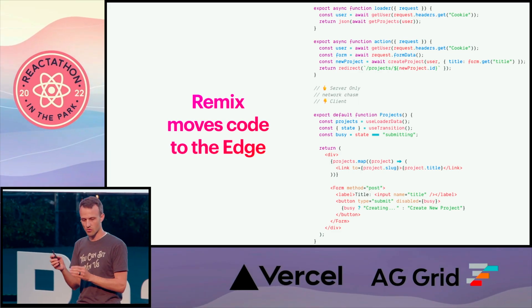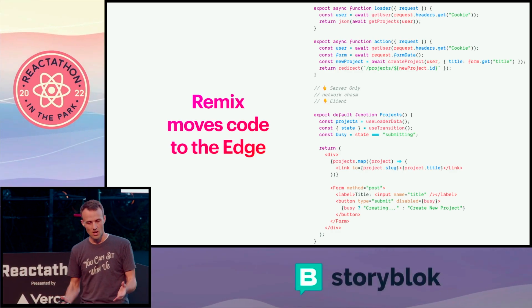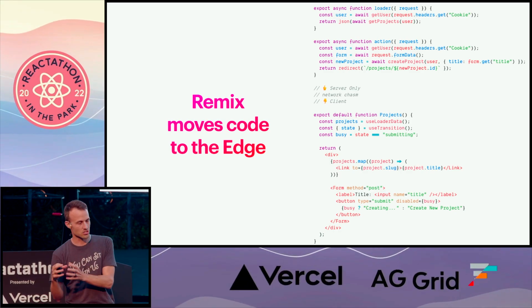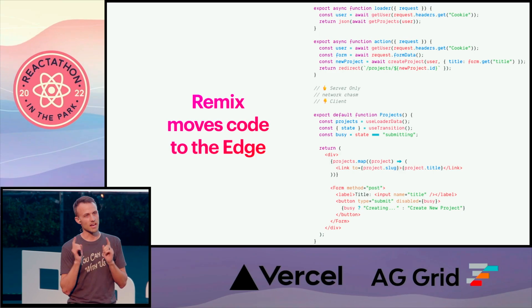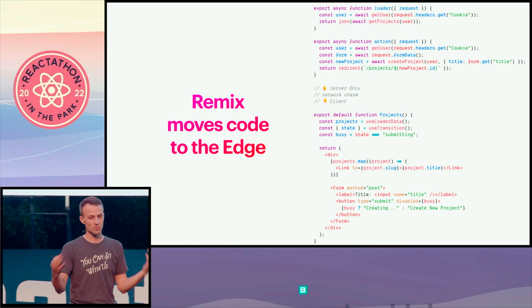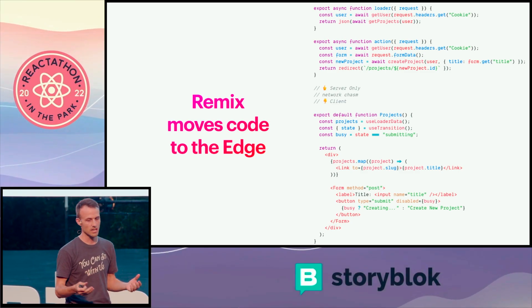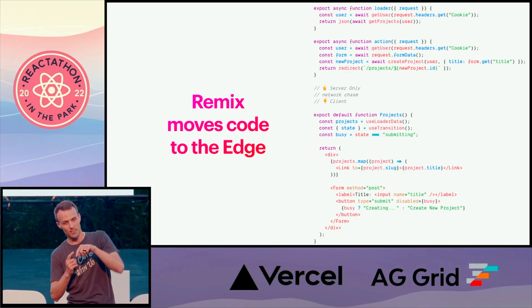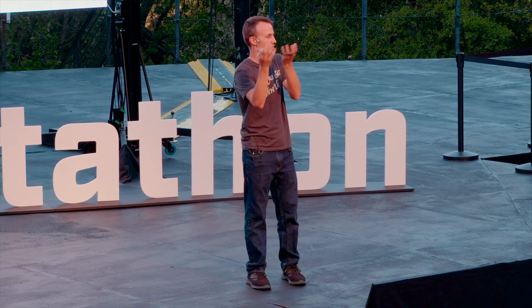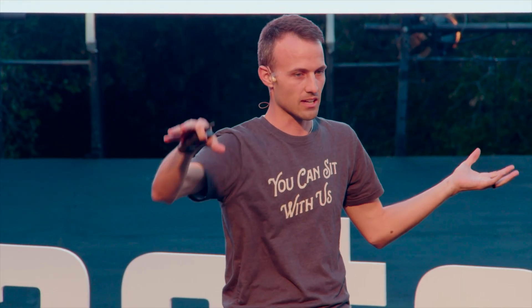The next thing is how Remix moves code to the edge. In a theoretical scenario before the edge, your server is deployed to Washington DC and a user in Hong Kong comes all the way around the world to get your HTML. One approach is to use FaunaDB or DynamoDB — something available all over the world — so users can get their data fast. But because you're in Washington DC, users still have to go all the way there to generate the HTML document. Another option is to client-side render everything and have the client do all the data fetching from whatever database is closest to them.